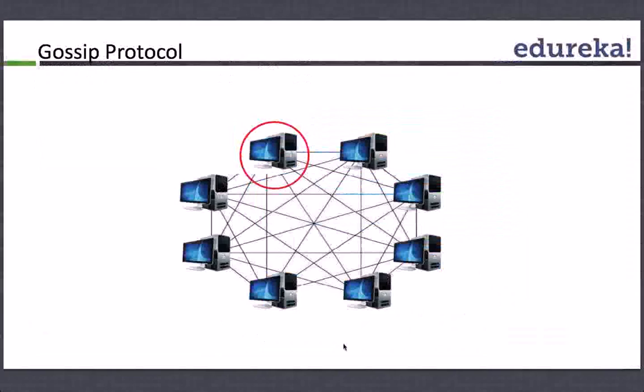But Cassandra has an intelligent solution for the gossip protocol. Intercommunication happens between one node to the other. If the node marked in the red circle communicates to the node on the right and gets its information about this node. Let's say this node had already contacted the node below and has its information. When it passes its information about itself, it also passes information about the other nodes it has communicated to.